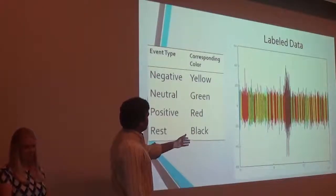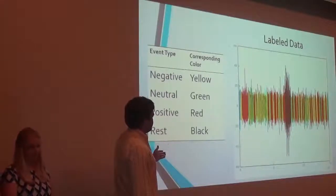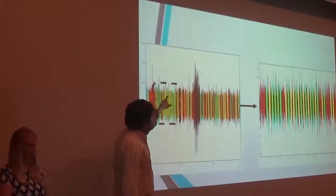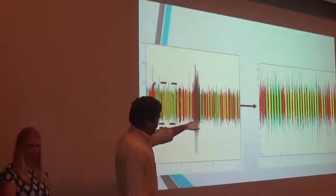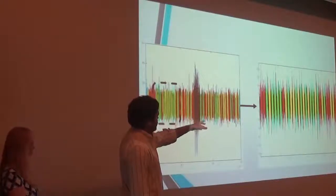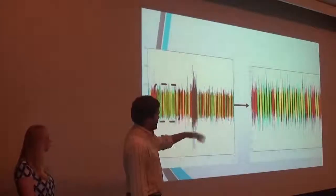So here's an example of what that looks like. The yellow is negative, the green is neutral, the red is positive, and the rest is black. So if we take this section right here and zoom in on it, you can see it better. As I said earlier, each event is broken up by the rest periods, and they're labeled red, green, or yellow.